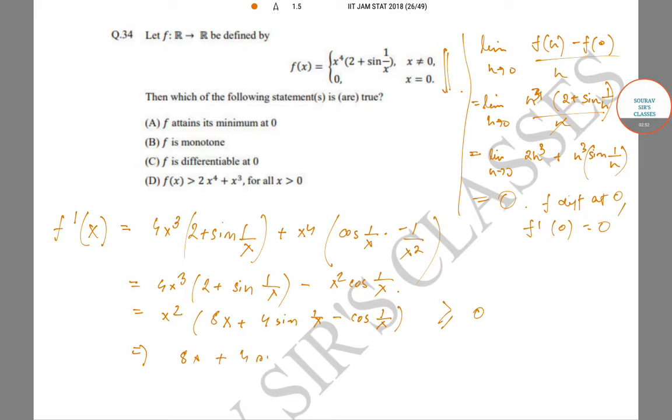For monotonicity, we need to check when this is greater than or equal to 0. I missed an X here - this should be 4x sin(1/x). So keeping x constant, we need 4x(2 + sin(1/x)) greater than or equal to cos(1/x).